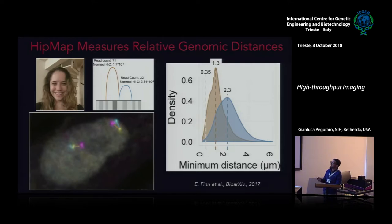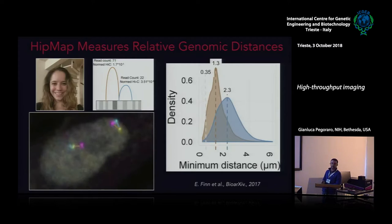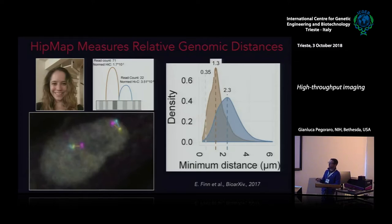Elizabeth Finn from the Misteli lab decided to use HIPMAP to look not just at a few loci but potentially tens or hundreds, to capture more general rules of how the genome is organized. She used DNA FISH with high-throughput imaging, staining cells with three different probes in three different colors, and used high-content image analysis to find all the spots in the cell and measure relative distances between them. She also incorporated Hi-C data — interaction frequency data — for all the loci she measured.